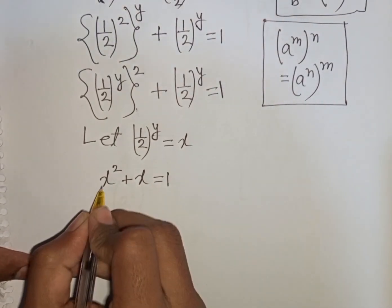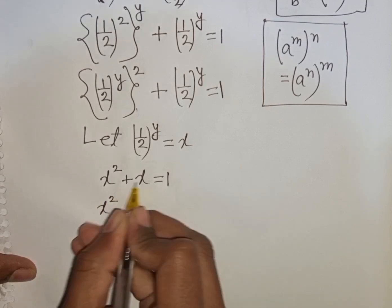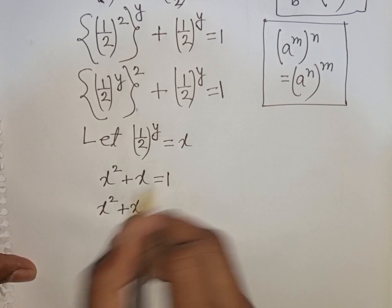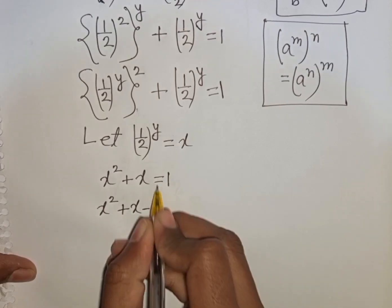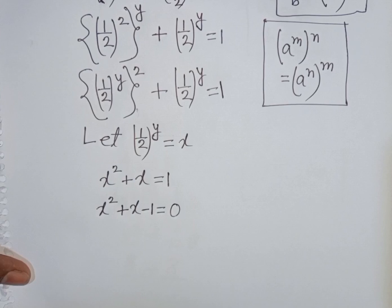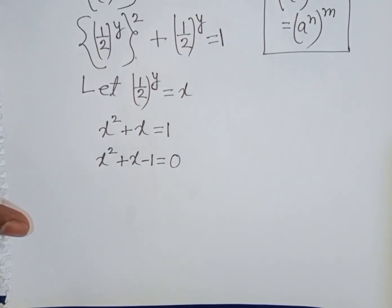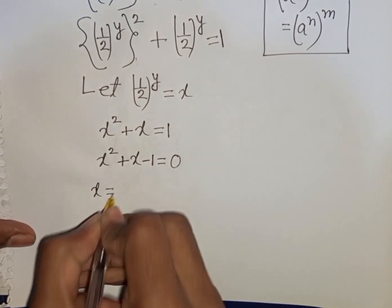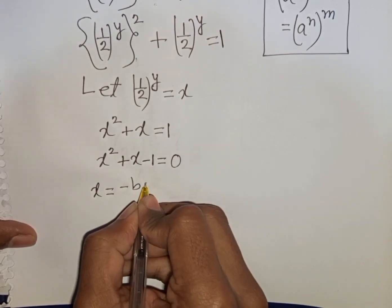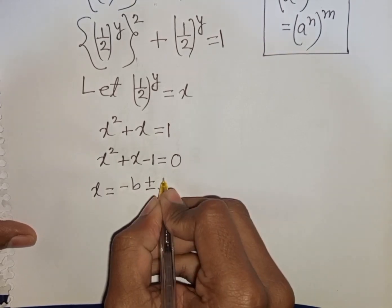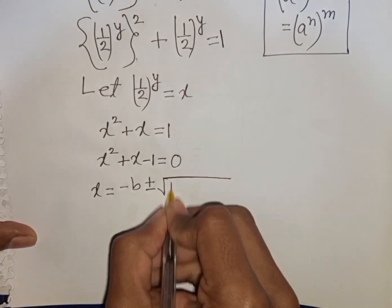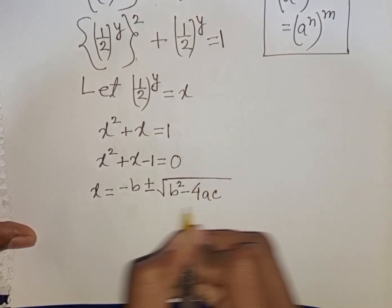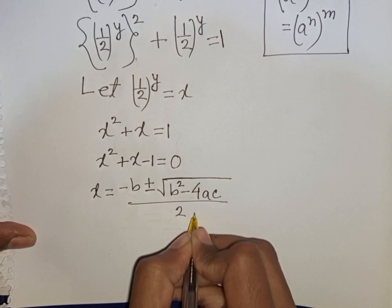We can rearrange to x squared plus x minus 1 equals 0. Now we apply the quadratic formula: x is equal to minus b plus or minus square root of b squared minus 4ac, divided by 2a.